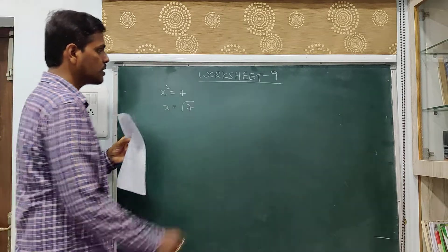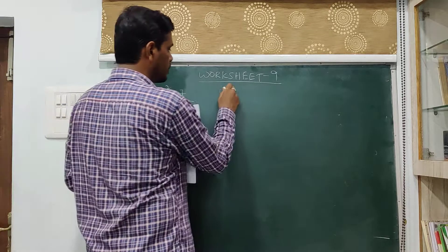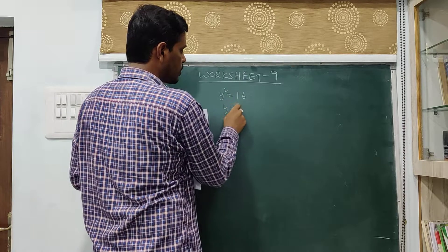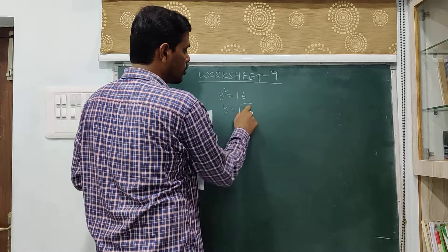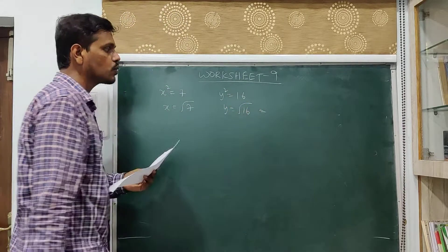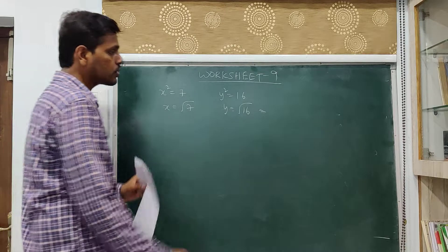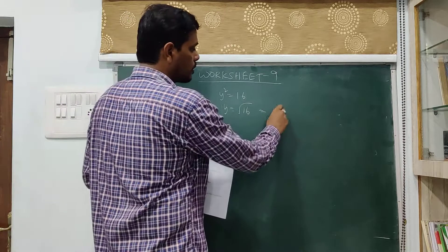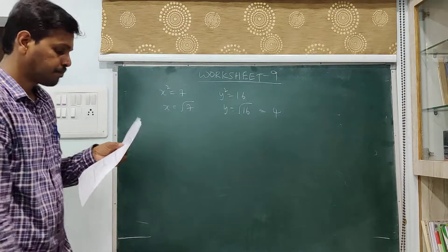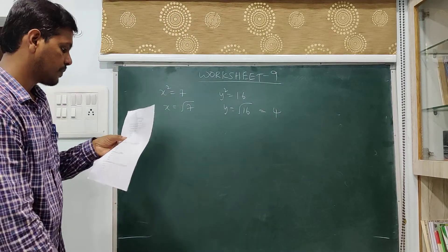Next: y squared is equal to 16. y is equal to root 16, and you can extract the square root of 16. The square root of 16 is 4. Therefore, this is a rational number.